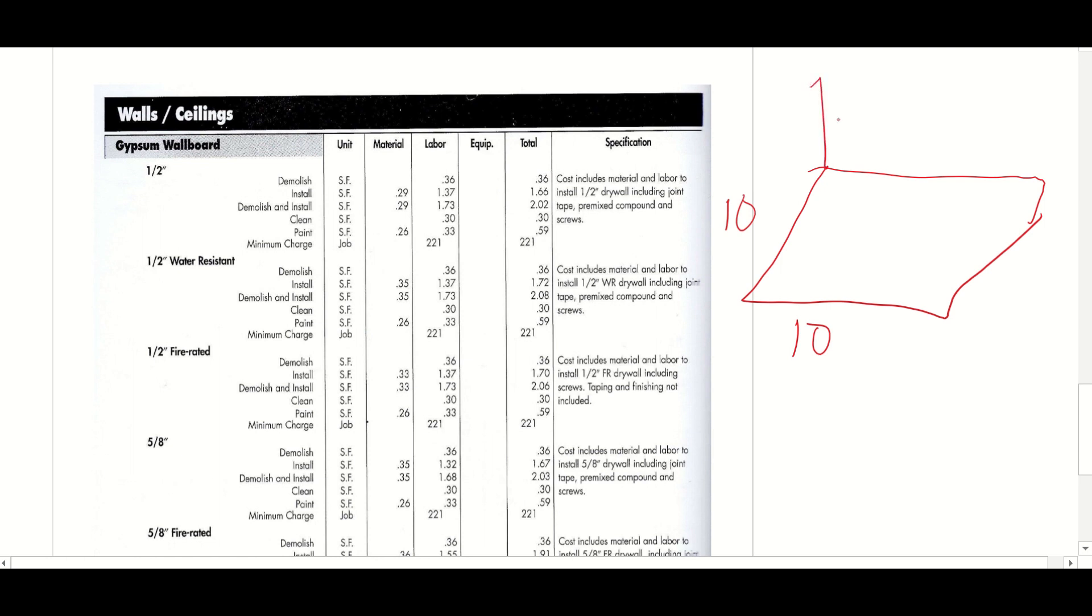Okay, do not say 10 by 10 equals 100. 100 times $1.66 is $166. That is not right. When we're talking about square feet, four walls, it's the actual wall itself. So my room actually has four walls and a ceiling. Don't forget the ceiling.